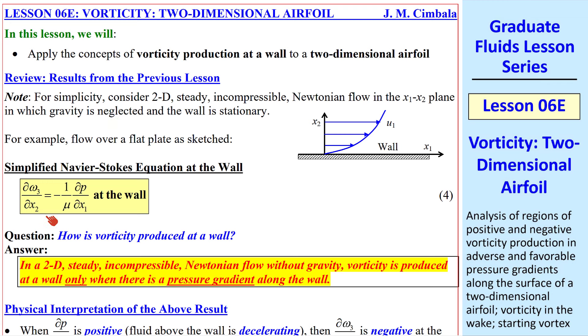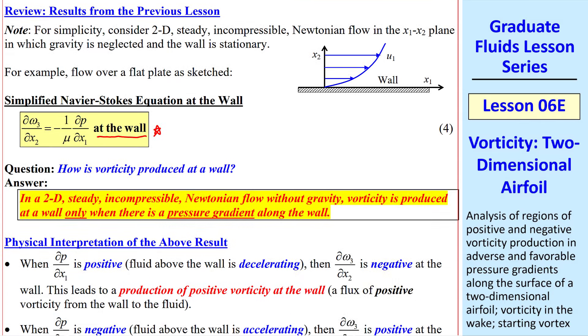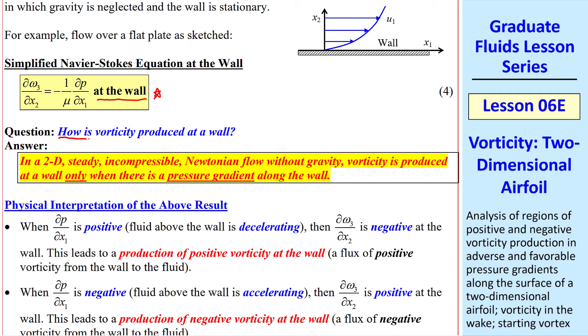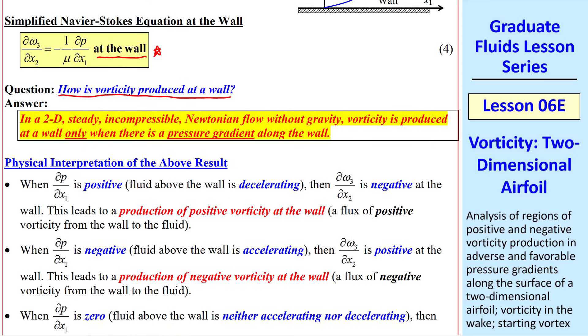Here's the simplified Navier-Stokes equation that we derived in the previous lesson, which applies at a wall. Recall our question: How is vorticity produced at a wall? The answer is that vorticity is produced only at a wall, and only when there's a pressure gradient along the wall.